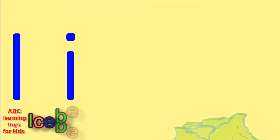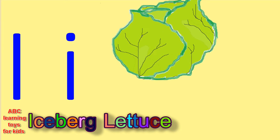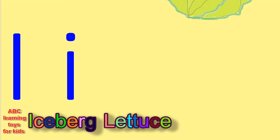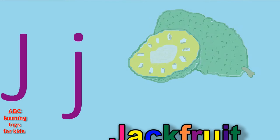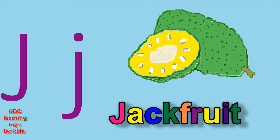I is for iceberg lettuce. Iceberg lettuce. J is for jackfruit. Jackfruit.